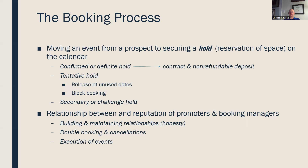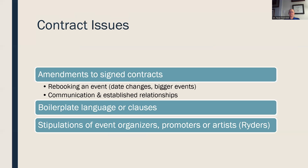Building relationships between promoters and booking managers is important, and all these things work into that relationship. Regarding rebooking: this happens when an act can't go on for some reason — then you work out the rebooking or the promoter has to refund everybody, which they don't like to do. Communication is key. Most contracts contain a lot of boilerplate or standard language, and when someone wants to change that it becomes a negotiating point.